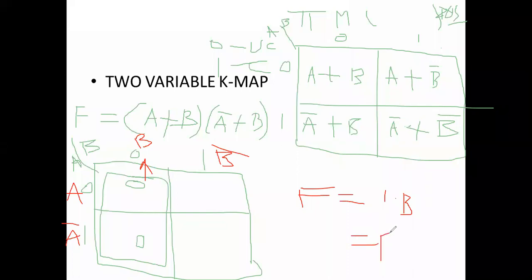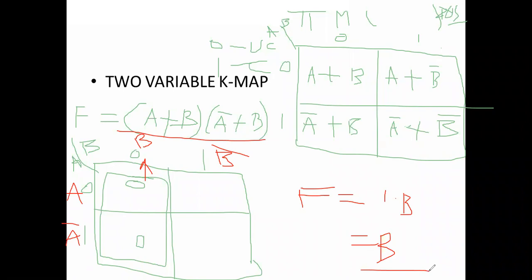So the given expression, by using K-map we simplify and we are getting the answer is B. Based on the groups only we are getting the expression. Now take another example in the same way.